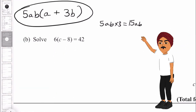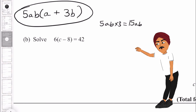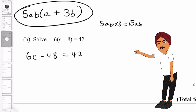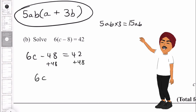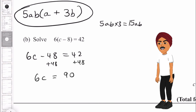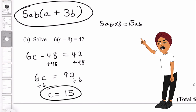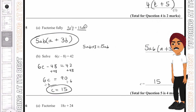Now let's solve 5b. Expanding gives us 6c − 48 equals 42. We add 48 to both sides to get 6c equals 90. Dividing both sides by 6 gives c equals 15. That is our answer.